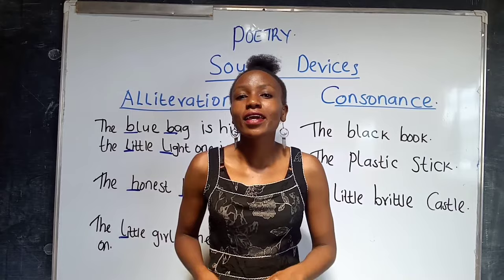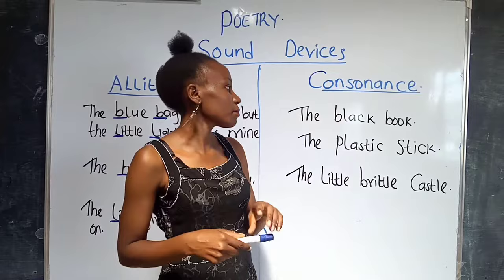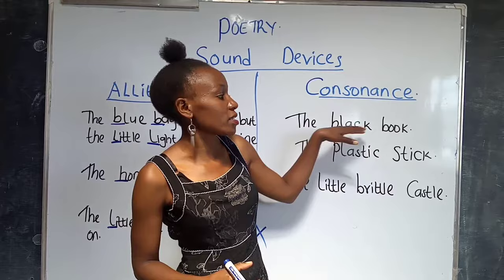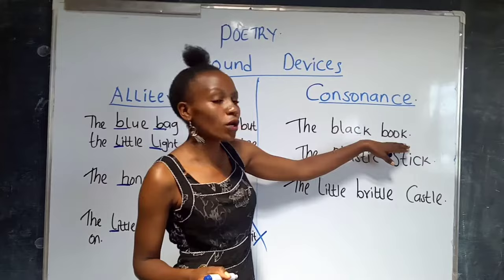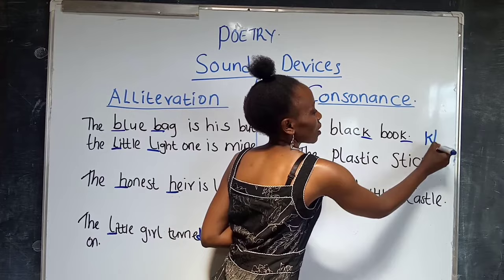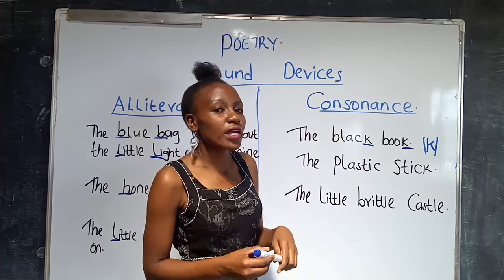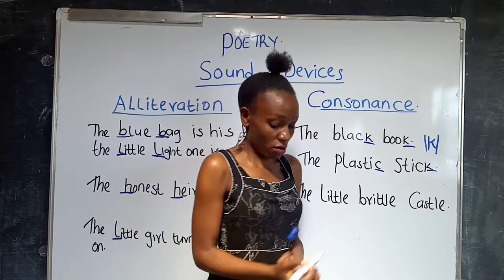We have these examples on the board. The first one: 'the black book.' The sounds have to be repeated at the end or in the middle of words which follow each other closely. Here we have 'black' and 'book' — at the end we have the sound K, so this is consonance. Number two: 'the plastic stick' — we also have the K sound repeated at the end of the words, making it consonance.